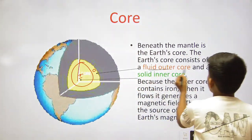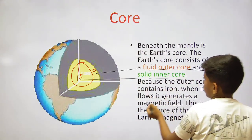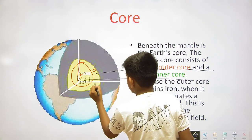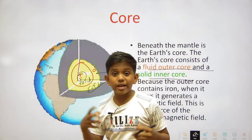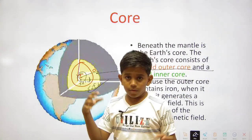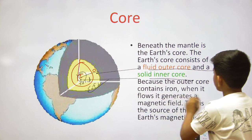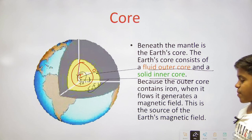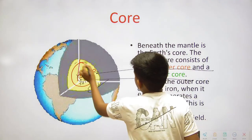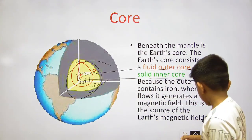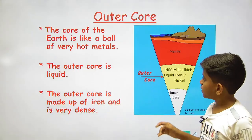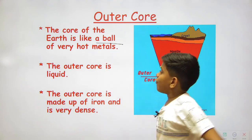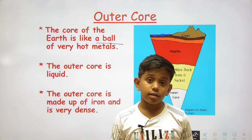The outer core is fluid and contains liquid iron, while the inner core is solid. When the iron in the outer core flows, it generates a magnetic field — this is the source of the earth's magnetic field. The core makes the magnetic field of the earth.